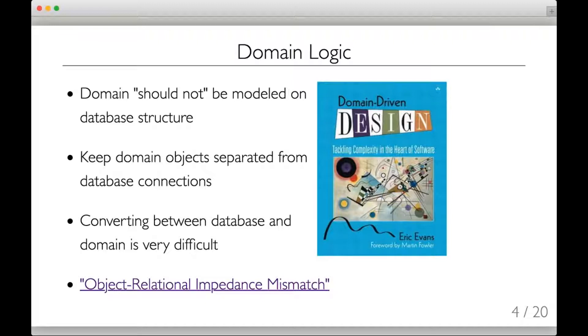This fundamental difference between the domain of business objects and the storage of data is called the object-relational impedance mismatch. The idea here is that converting between tabular rows and columns to object classes and inheritance structures seems like it should be easy, at least at first, but it turns out it's exceptionally difficult.